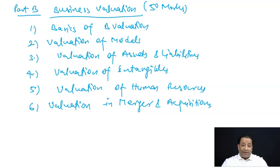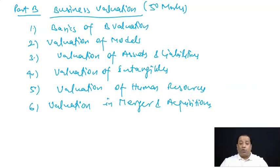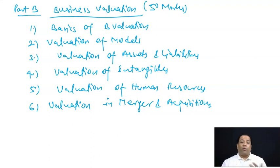Energy level high होना चाहिए। यह बहुत आसान है अगर हमारे conceptual clarity clear है। Super Profs में access होता है तो आप उन concepts को बार-बार review कर सकते हो — क्योंकि there are certain concepts which are deemed to be difficult, and there are certain easy concepts। जो थोड़े difficult concepts होते हैं, उनको हमें एक से दो बारी देखने की ज़रूरत पड़ती है।